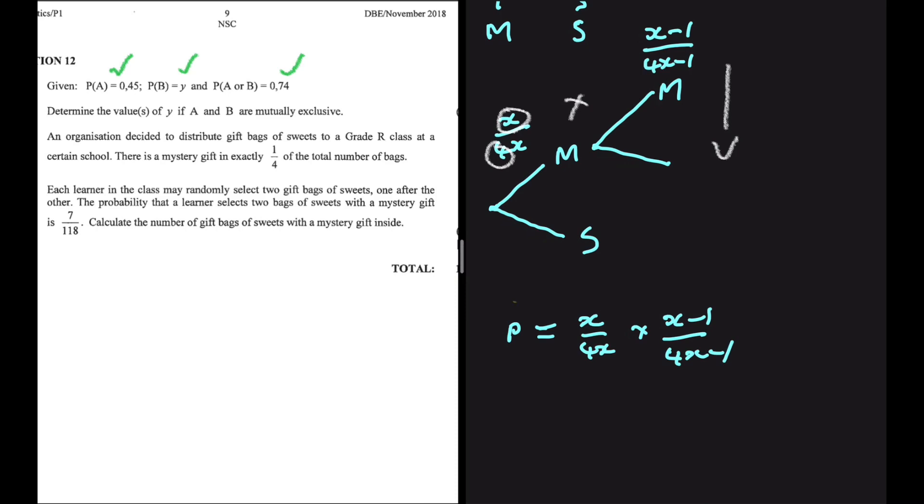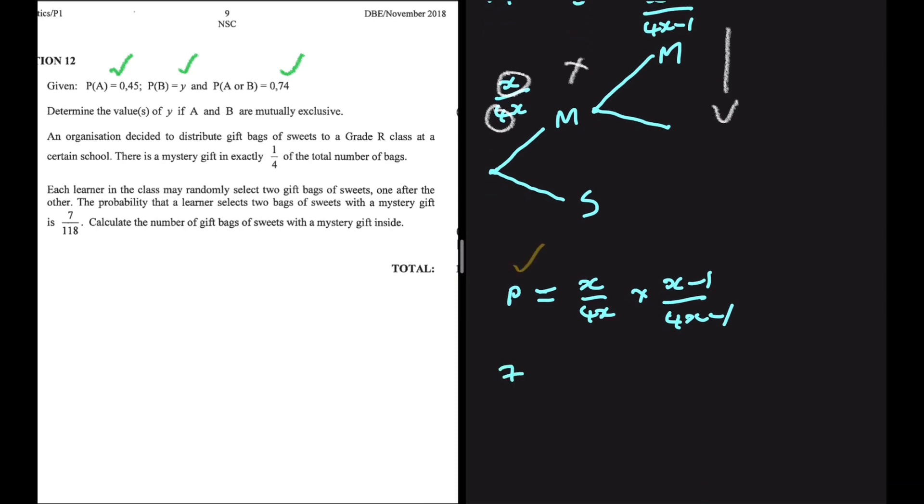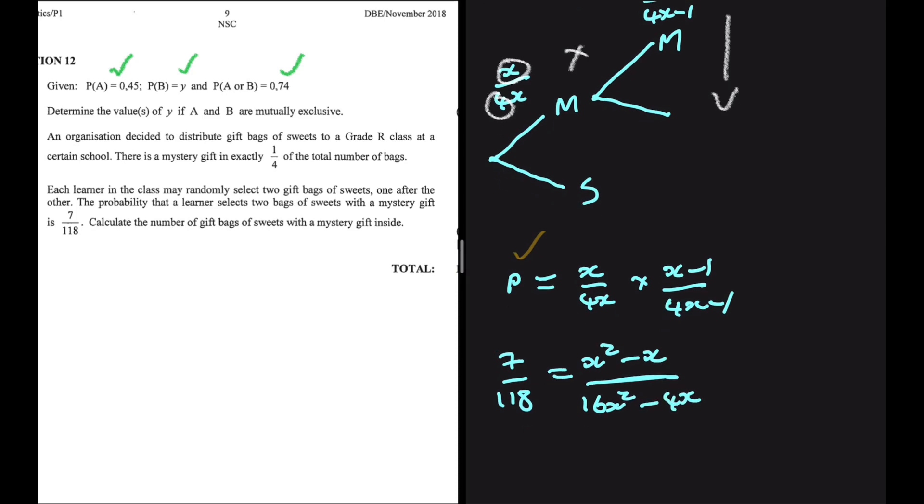But we are given that probability. It is said to be equals to 7 divided by 118. So this is equals to it. To solve this, we need to multiply the numerators together and the denominators together.